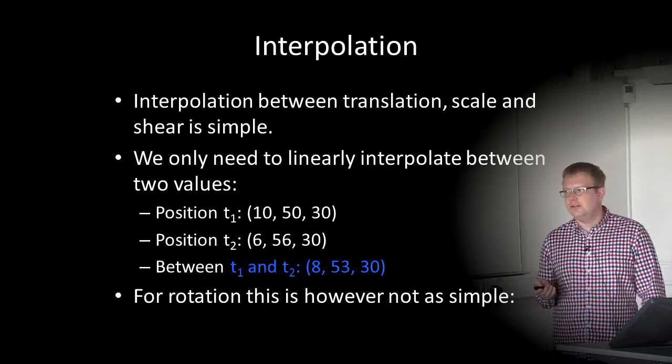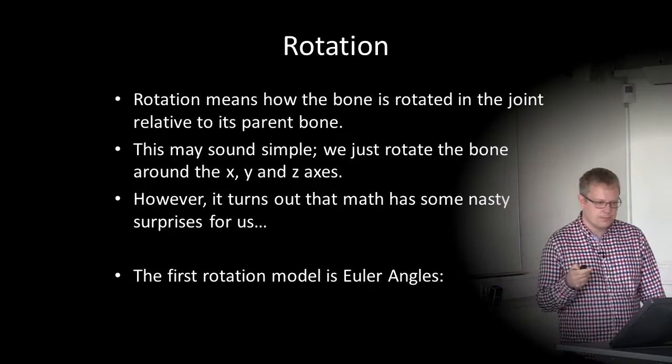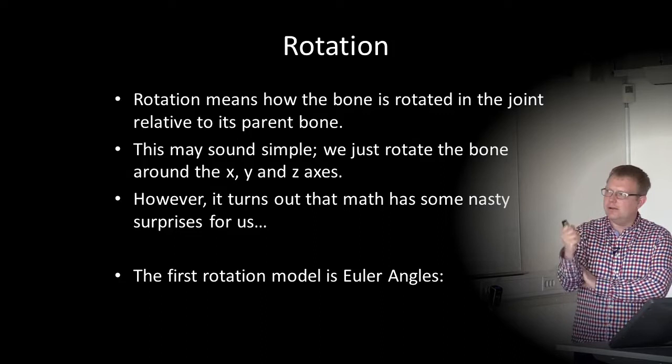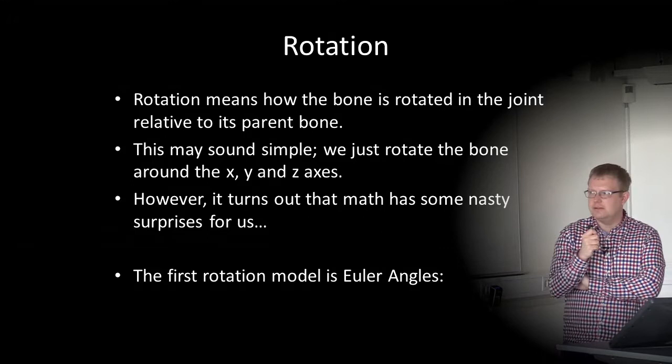There is a problem, however, for rotations. Interpolation for rotations is not as simple as we think it should be. Rotation means how the bone is rotated in the joint relative to its parent bone. We just rotate the bone around the X, Y, and Z axes — but it turns out that math has some nasty surprises for us.